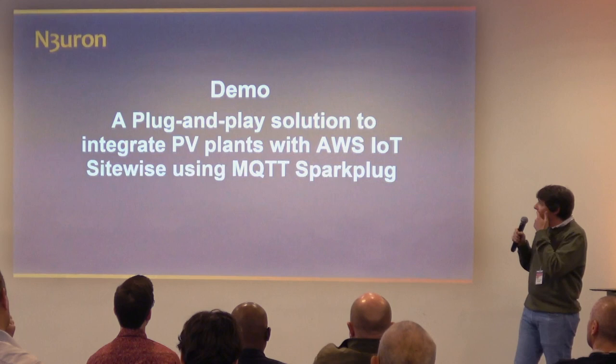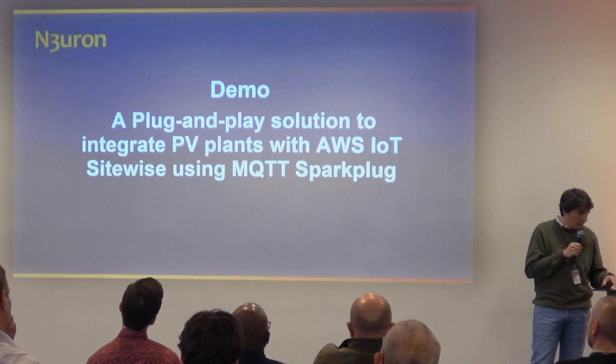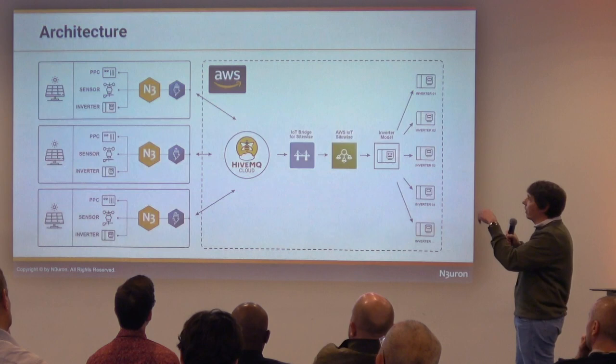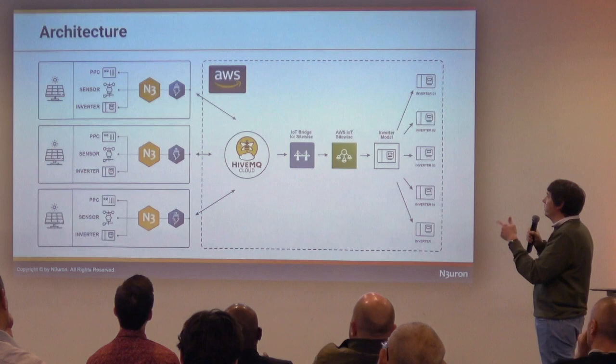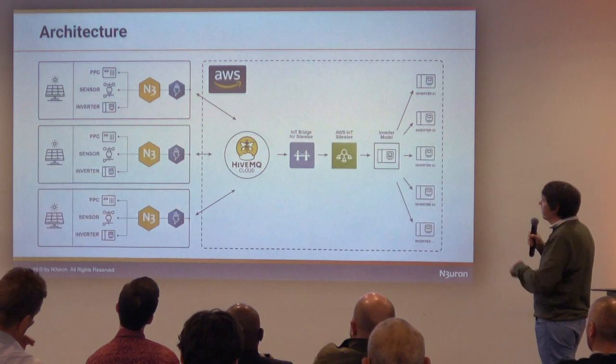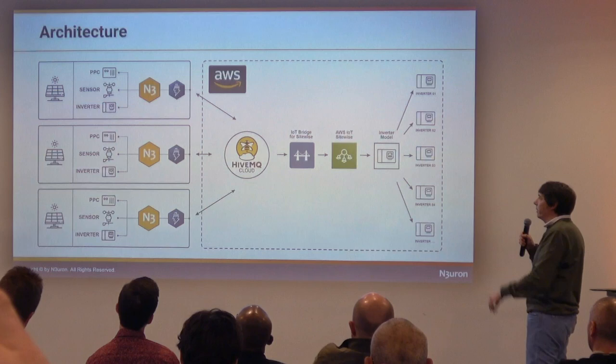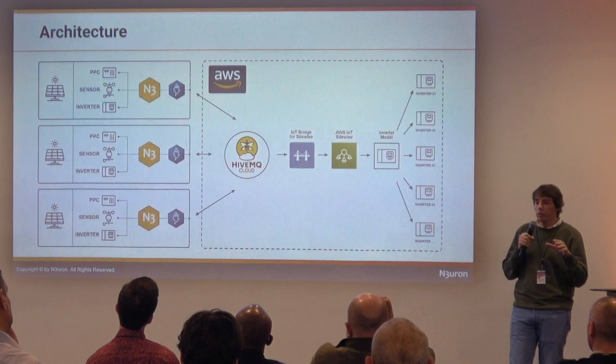Now let's go through a demo of a Sparkplug solution to integrate PV plants with AWS IoT SiteWise. The architecture has several PV plants on the left-hand side where Neuron connects to all the devices and systems in the plant. Using Sparkplug, we exchange this data with HiveMQ Cloud, and using a component available in AWS Marketplace, we'll see how the data model is automatically recreated in IoT SiteWise — not only the data model but also the templates.